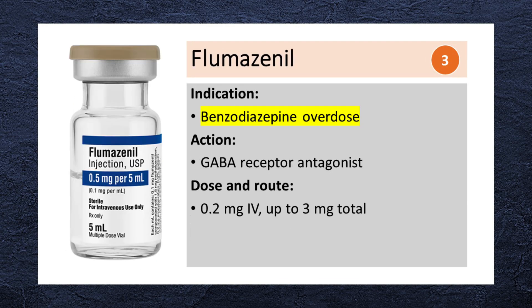Flumazenil is a benzodiazepine receptor antagonist indicated for benzodiazepine overdose. It is given in a dose of 0.2 mg IV and may be repeated every minute up to a maximum total dose of 3 mg.